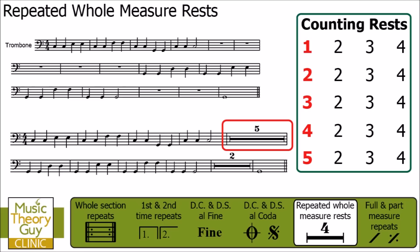So with five bars or measures rest, they will go: one, two, three, four — two, two, three, four — three, two, three, four — and so on until they get to five, two, three, four — and then they carry on playing.